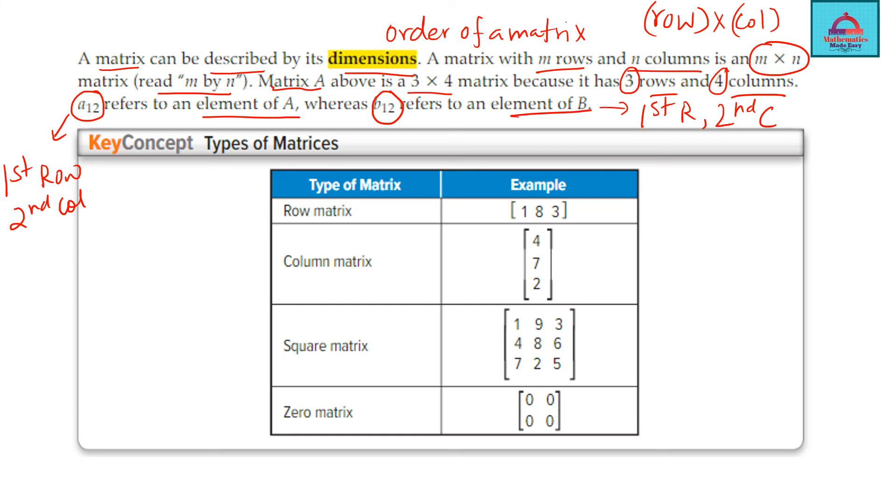Next, we come to types of matrices. So there are different types of matrices that are possible, out of which the simplest is zero matrix, where all elements in that matrix are zero. Now think about the order of this matrix: 2 rows, 2 columns. So it's a 2 cross 2 matrix. And such matrix where row and column are equal also have a different name. That's a square matrix.